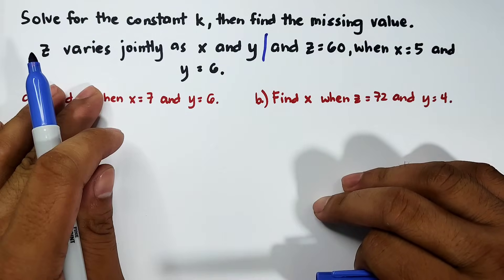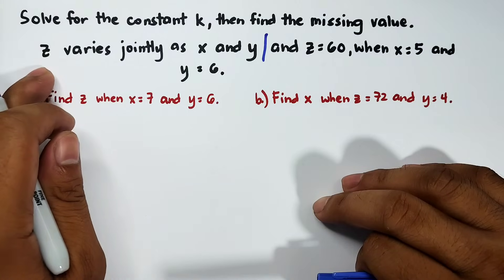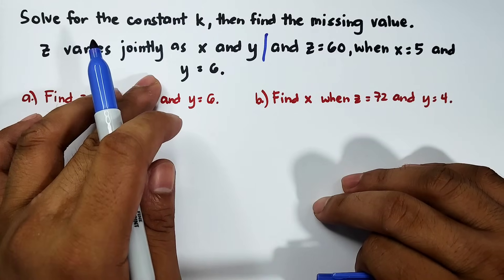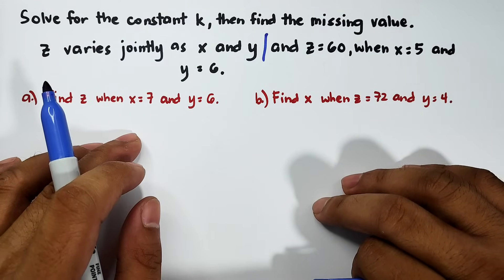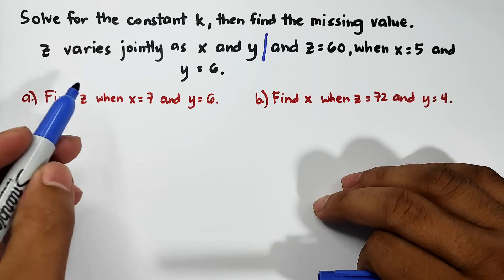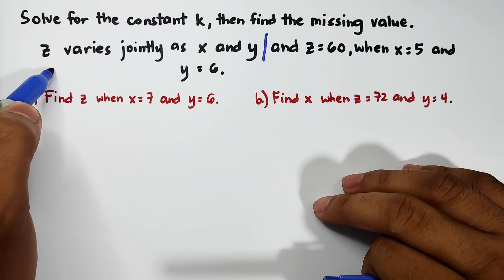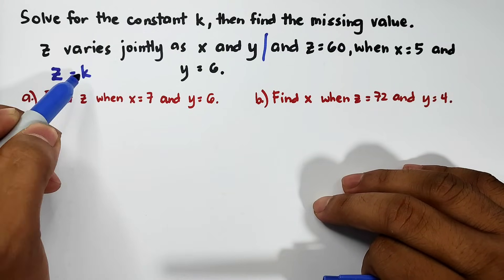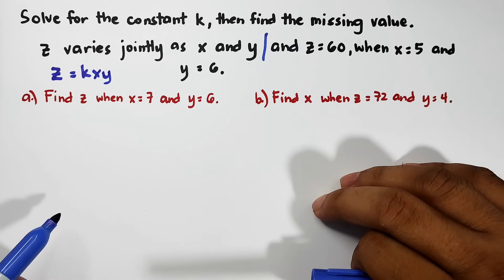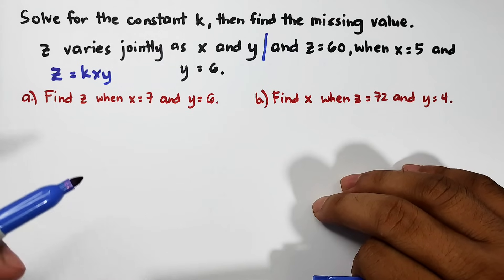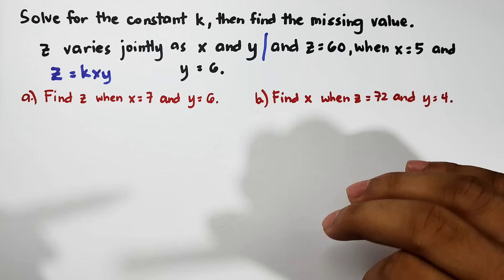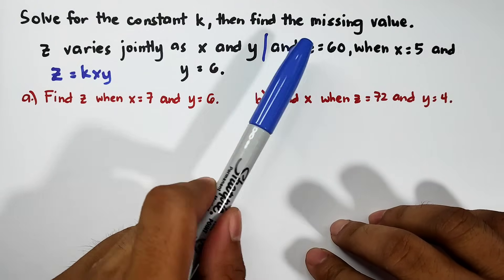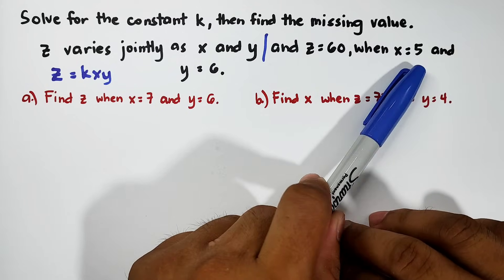Put a slash here as the separation. The purpose of this first statement — z varies jointly as x and y — is that this will give you the general formula for the joint variation. So translating it: z varies jointly, z is equal to k times x and y. That is the general formula for this statement. Now, the next statement: z is equal to 60 when x is equal to 5 and y is equal to 6.